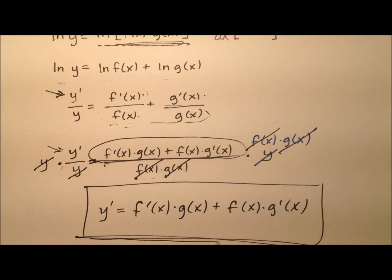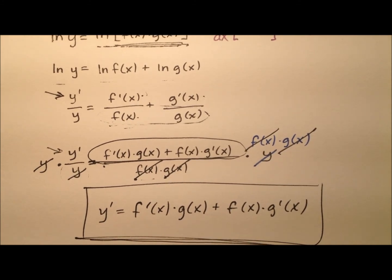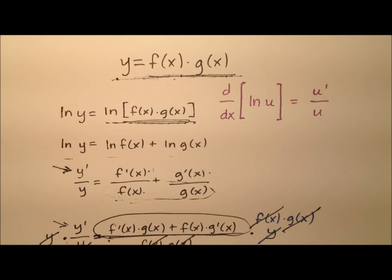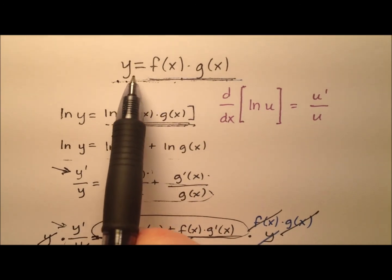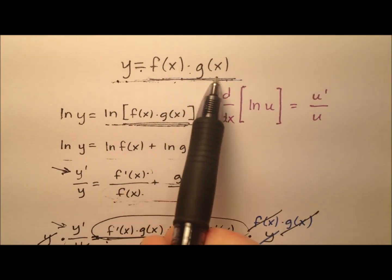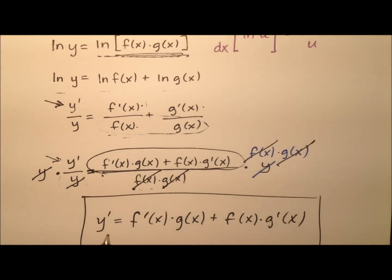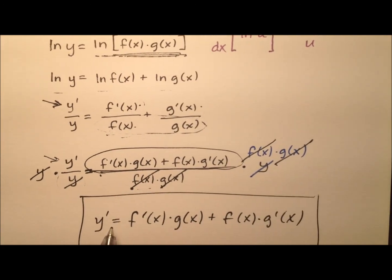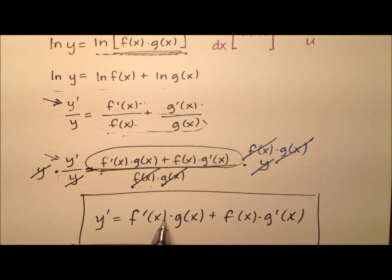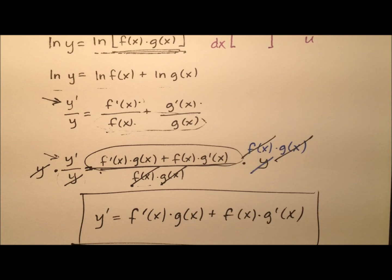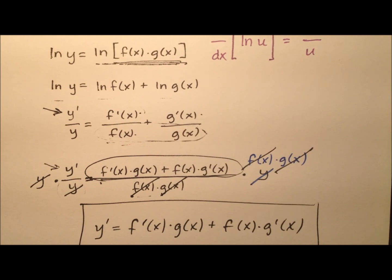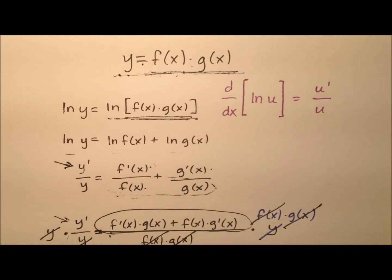And maybe you recognize this already. What we have here is the product rule for derivatives in calculus. We had y equals f of x times g of x, the product of two functions. So y prime is the derivative of the first times the second, plus the first times the derivative of the second. And we derived that by using logarithmic differentiation.